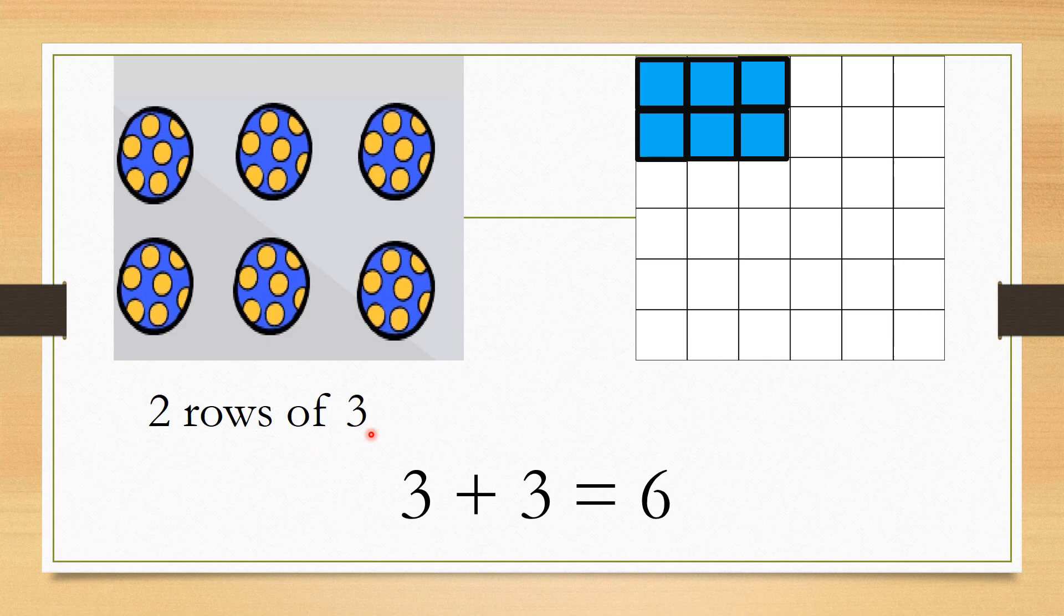To find the total here, I will add three. How many times? I will add it two times because I have two rows. So three plus three equals six. This means I have six balls in total. As you can see: one, two, three, four, five, and six balls.